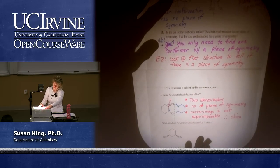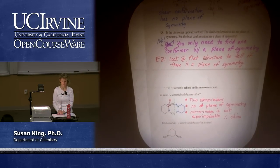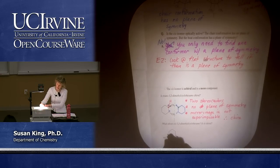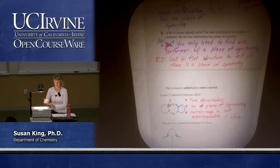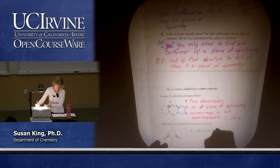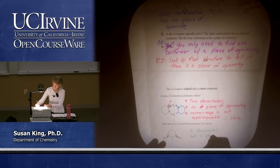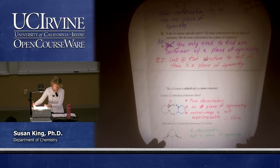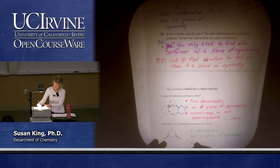What about cis-1,3-dimethylcyclohexane? Is it chiral? I'm seeing two stereocenters but also a plane of symmetry right here — I can slice that in half and the left hand side is the mirror image of the right hand side. So we have two stereocenters but a plane of symmetry, therefore this compound is achiral and it's also meso.